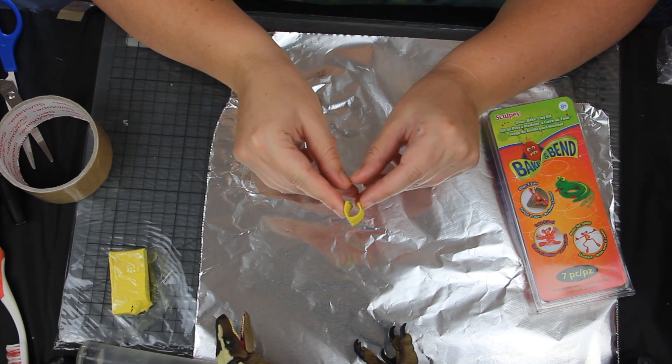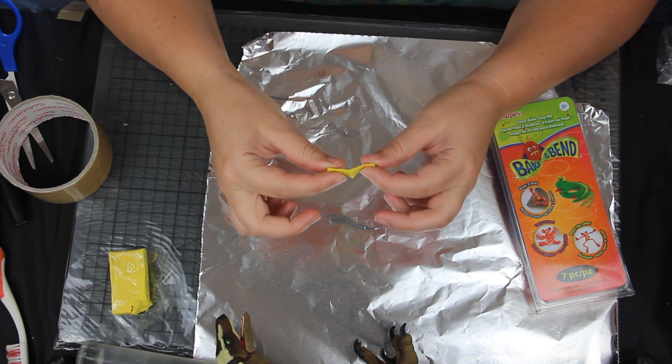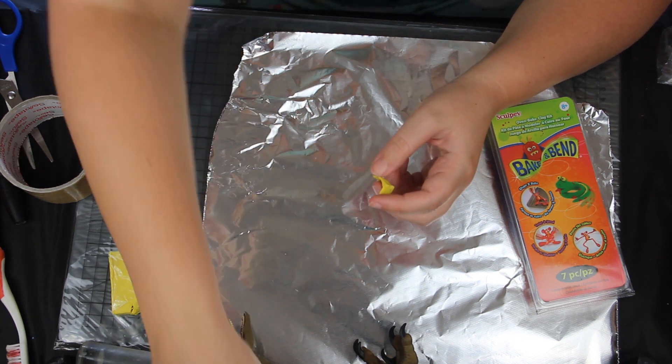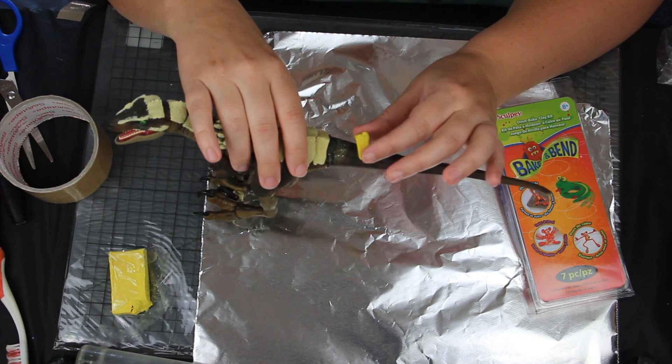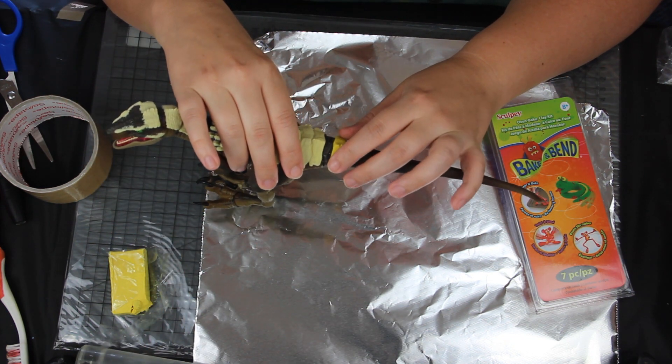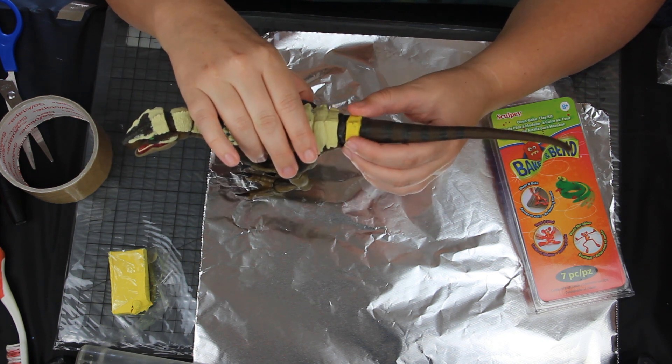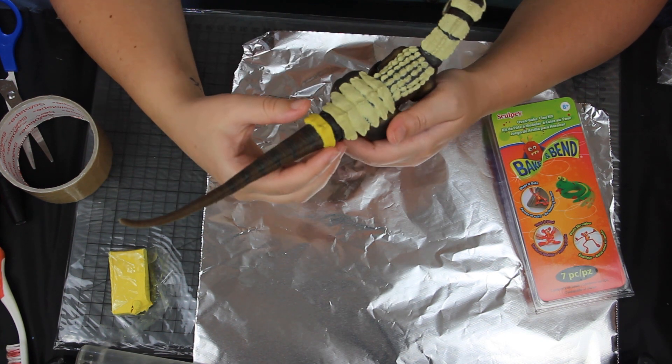So it actually worked really well and you can see how bendable the clay is once it sets. I'm quite happy with it, so now I'm just going to glue it down and then add tinfoil to the rest of the tail so I can continue sculpting the tail.